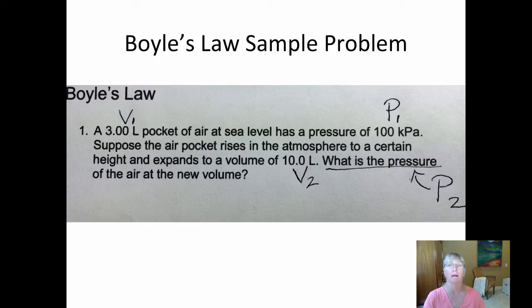I put a little dot after the second zero so that one would have three sig figs when I solve the problem. So then I read again, it expands to a new volume, that must be the V2.